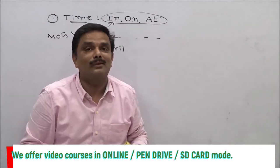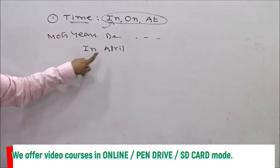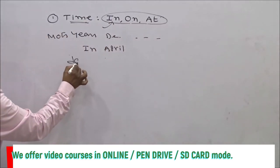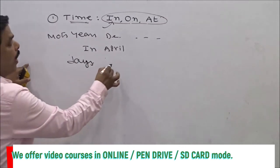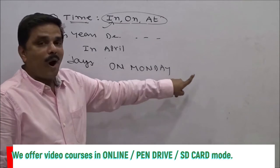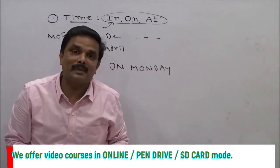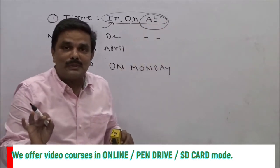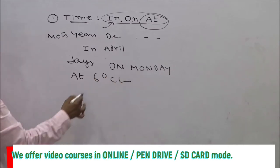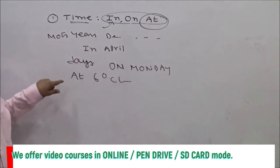When to use 'on'? A little more specific — 'on' is used to denote days. For example: 'on Monday,' 'on Sunday.' 'My examination is on next Monday.' 'We will go for a picnic on Tuesday.' For days of the week, use 'on.' When to use 'at'? 'At' is used more specifically. For example: 'at six o'clock,' 'at five o'clock,' 'at midnight.' When you know the specific clock time, use 'at.'